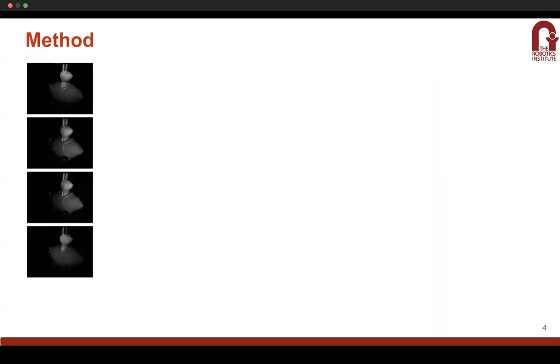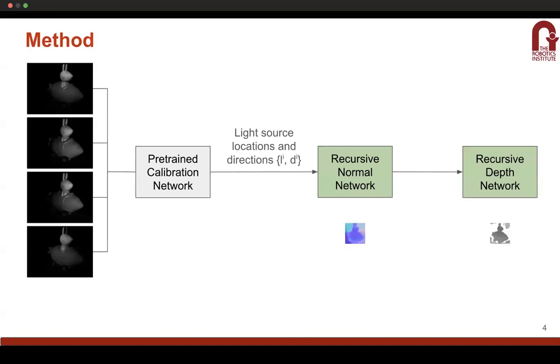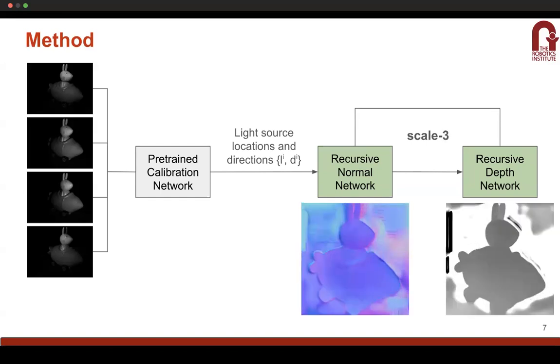Coming to the method, we start off with images of a static scene captured from the same viewpoint under different light source positions. Since the light source positions are assumed to be unknown, we use a pre-trained calibration network to estimate the light source directions and locations. Using these images and light source locations, we use a CNN to estimate the normals of a particular image. Here the normals refer to the surface normals, and using these normals we also estimate the depth of that particular image. This neural network is called recursively at different scales of the image by successively upsampling it in each iteration. At iteration zero, if the resolution is this, we successively increase it until we reach the final resolution of the image. This way we can get the full resolution normals and the depths of the original image.